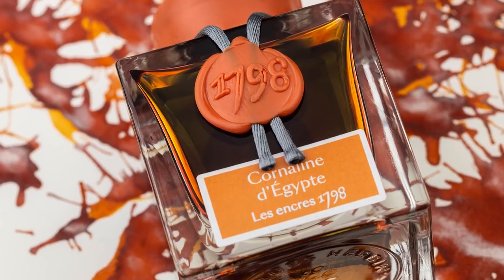So the big ink news this week, once-a-year 1798 anniversary Corneline d'Egypte. Egyptian coral. Really, really nice, and it comes in the nice 1798 bottle. It's kind of like a dark orange, burnt copper almost, sheens to silver. But it doesn't look like you have to put down that much to get that to come out.